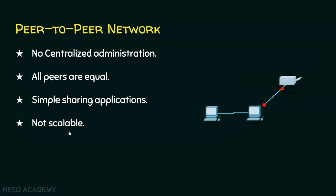Scalability means new devices can be added to the network, but peer-to-peer is not a scalable network. For example, if a computer has only two ports — meaning it can connect to only two devices — then only two devices can be connected with it. That is why we call peer-to-peer network not scalable.